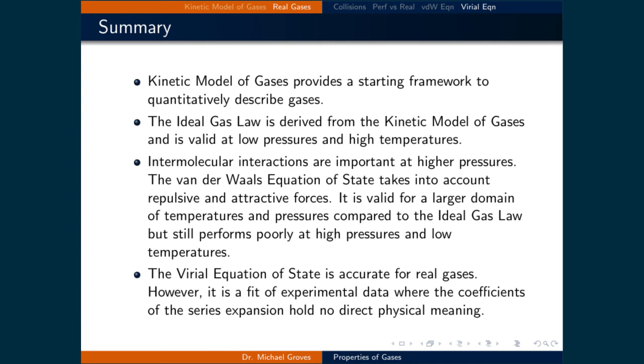We started this lecture by looking at the kinetic model of gases, which provided an initial framework from which to quantify the properties of gases. The ideal gas law is derived from the kinetic model of gases and is valid when gases are at low pressures and high temperatures. This is because the kinetic model of gases and the ideal gas law do not account for intermolecular interactions, which become important at higher pressures and lower temperatures. The van der Waal equation of state tries to take these interactions into account and is valid over a larger domain of temperatures and pressures compared to the ideal gas law.